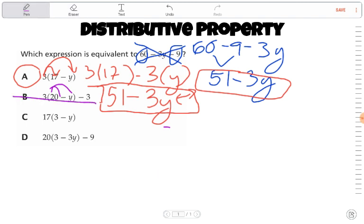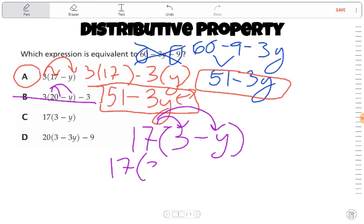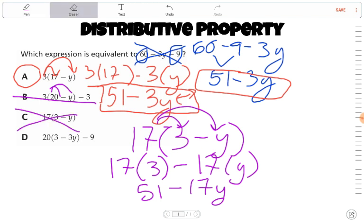Let's move on to C, where I have 17 times 3 minus y. I'll distribute that 17 to each. I end up with 17 times 3 minus 17 times y. We already did the math that 17 times 3 is 51, but that's 51 minus 17y. 51 minus 17y is not the same as 51 minus 3y. I will cross that out.